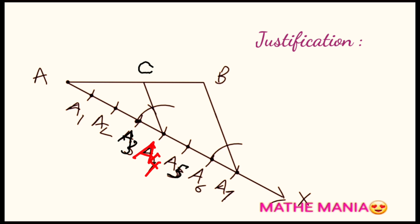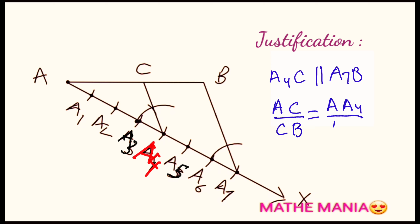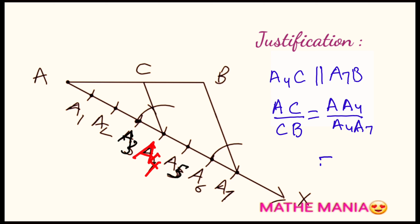We have got point C which divides line segment AB in the ratio 4:3. For the justification: we have drawn line segment A4C parallel to one side A7B of triangle A-B-A7. As per the Basic Proportionality Theorem, A4C divides the other two sides in the same ratio, so AC/BC = A-A4 / A4-A7. Since A-A4 has four equal parts and A4-A7 has three equal parts, their ratio is 4:3, and so AC/CB is also equal to 4:3.